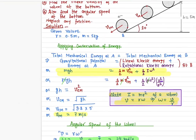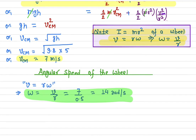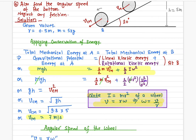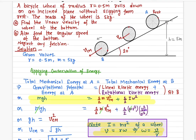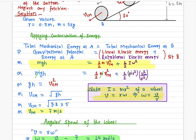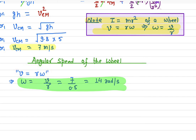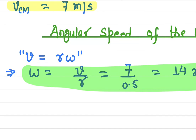So this is how we calculated the angular speed and the center of mass velocity for a bicycle wheel on an inclined plane. All we did was apply conservation of energy, using the relations for moment of inertia and v = rω. Remember, this formula applies to the center of mass velocity.